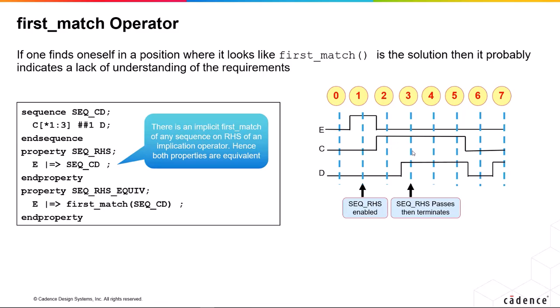So we don't sit around and wait for all the other times it might pass. There's an implicit first match on the right-hand side of every implication operator. You don't even think about it because it's implicit.